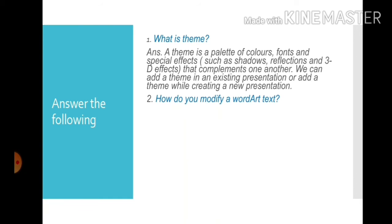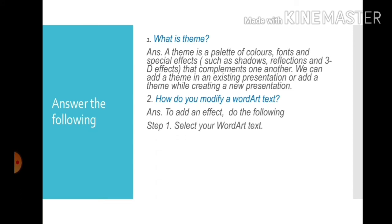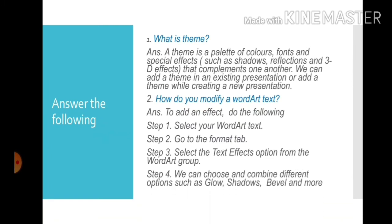Question number two: How do you modify a WordArt text? Answer: To add an effect, do the following. Step one: Select your WordArt text. Step two: Go to the Format tab. Step three: Select the Text Effect option from the WordArt group. Step four: We can choose and combine different options such as glow, shadows, bevel and more.